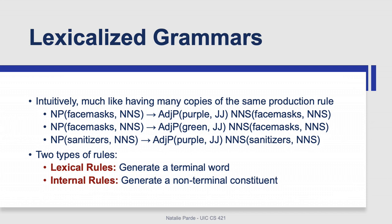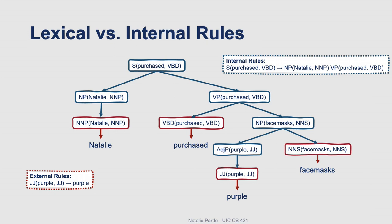The production rules in a lexicalized grammar can be divided into two different categories. You have lexical rules, which generate a terminal word, and internal rules, which generate a non-terminal constituent. In this image, the nodes you see in blue correspond to internal rules and the nodes you see in red correspond to lexical rules.